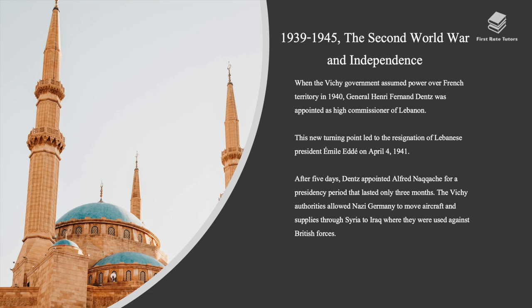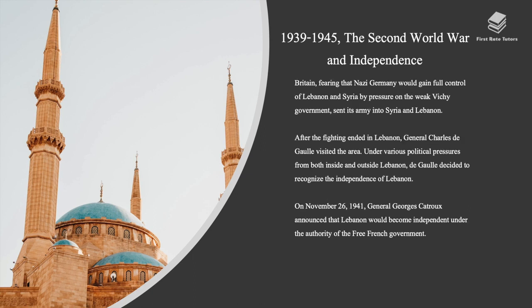When the Vichy government assumed power over French territory in 1940, General Henry Fernand Dentz was appointed as High Commissioner of Lebanon. This new turning point led to the resignation of Lebanese President Emil Edde on April 4th, 1941. After five days, Dentz appointed Alfred Naccache for a presidency period that lasted only three months. The Vichy authorities allowed Nazi Germany to move aircraft and supplies through Syria to Iraq, where they were used against British forces. Britain, fearing that Nazi Germany would gain full control of Lebanon and Syria, sent its army into Syria and Lebanon. After the fighting ended in Lebanon, General Charles de Gaulle visited the area and decided to recognize the independence of Lebanon.